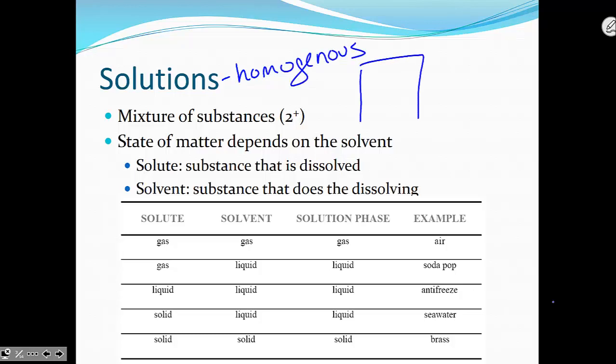Homogeneous means there's an equal distribution of particles throughout. For example, the air you're breathing is mostly nitrogen, but there's also some oxygen sprinkled in, a little bit of carbon dioxide, and it's equally distributed throughout that whole mixture.